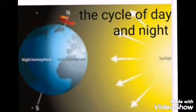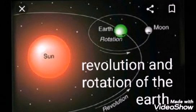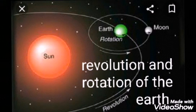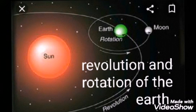Our earth rotates around its axis at a certain speed. We have seen in EVS 1 that the sun is the star of our solar system and only the sun has its own light. Because of the rotation of the earth there is the cycle of day and night, and because of the revolution of the earth around the sun there is the cycle of seasons.